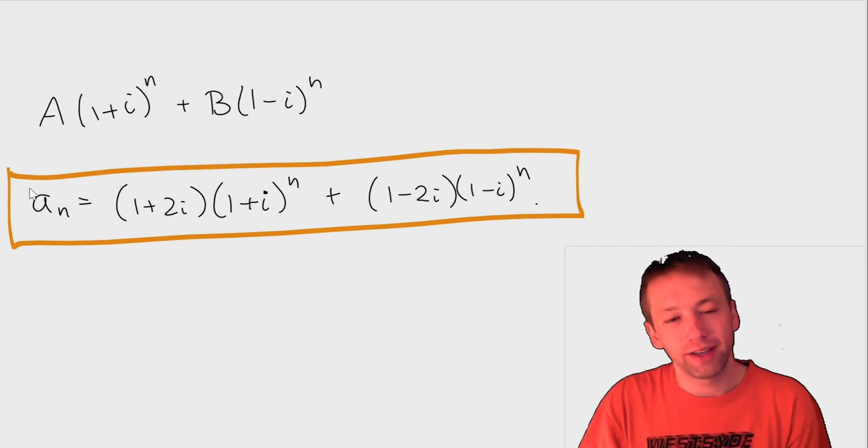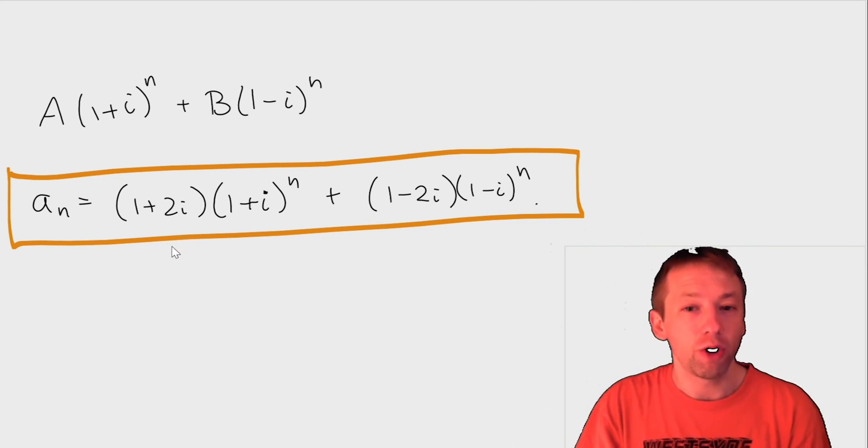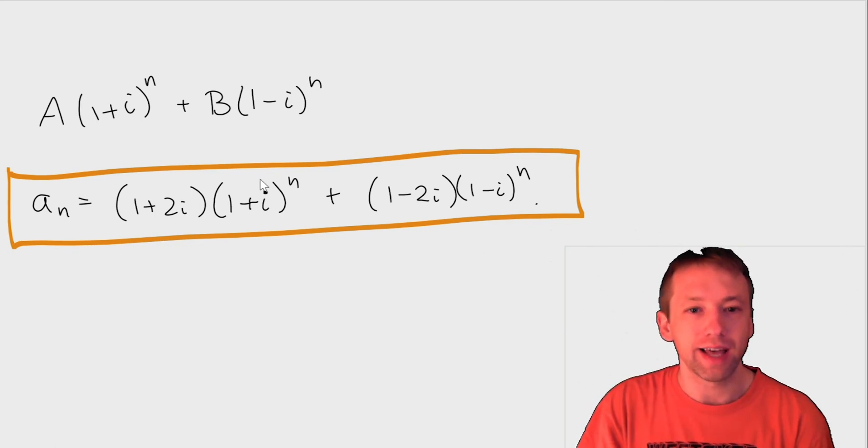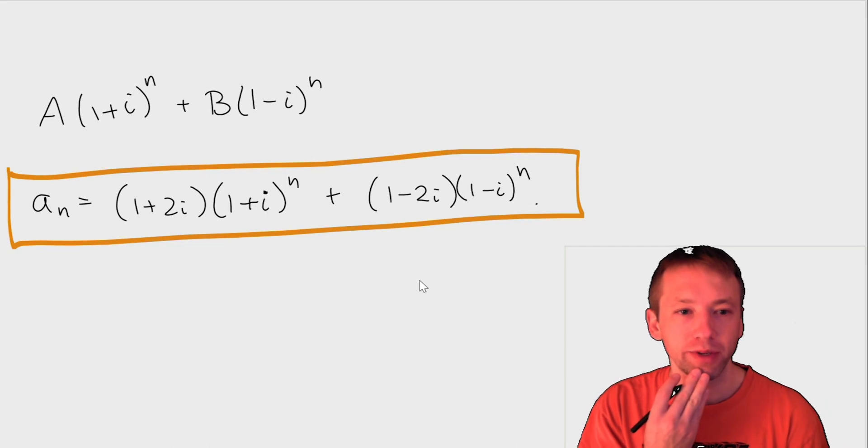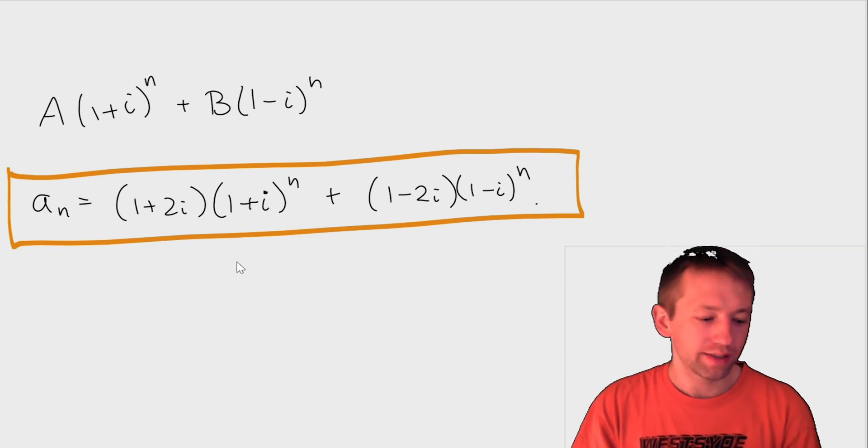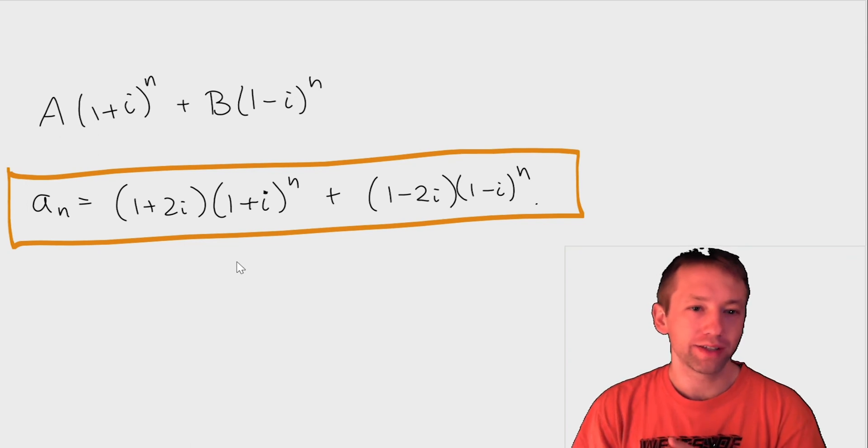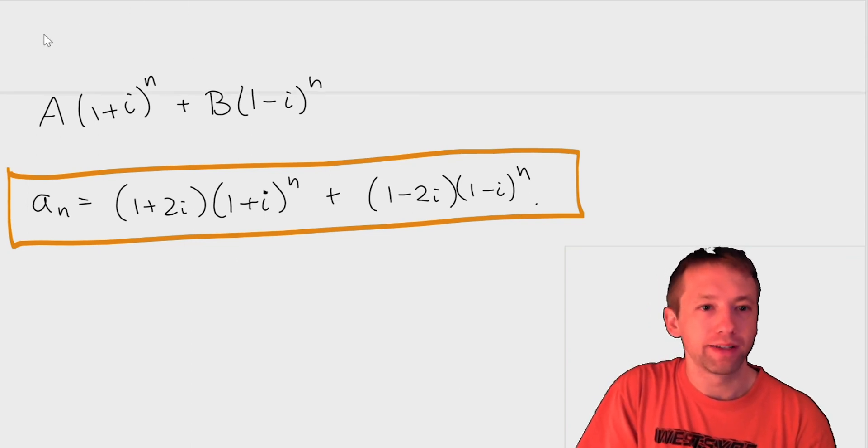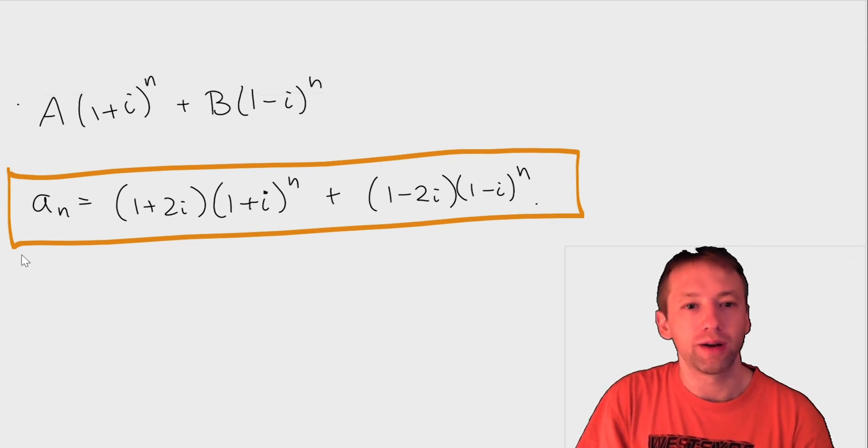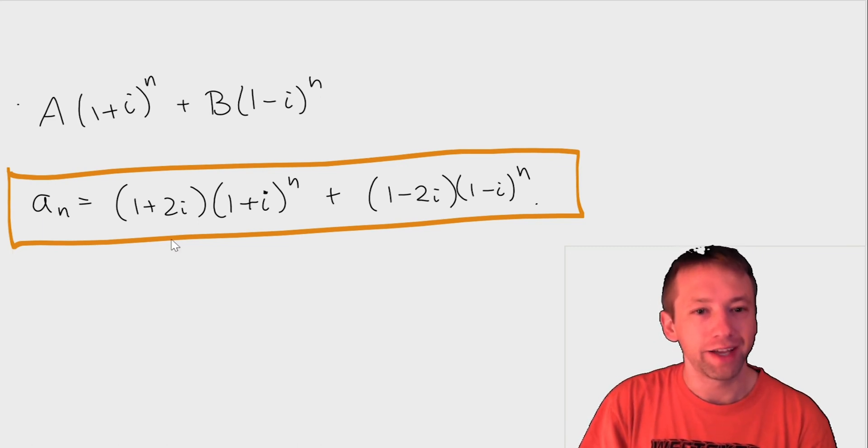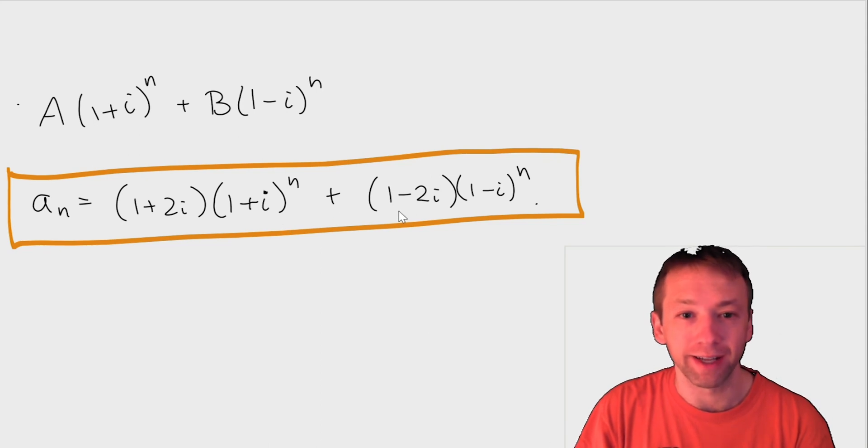And it turns out, yeah, these things do always kind of cancel out and give you an integer. It might not be easy to see that right from here, but it always will be true. And always with these things, if you are worried about it, you can always check the answer, but you don't really need to. As long as you've solved the equations correctly, you will get the right answer. It just, don't be afraid if it has complex numbers in it.